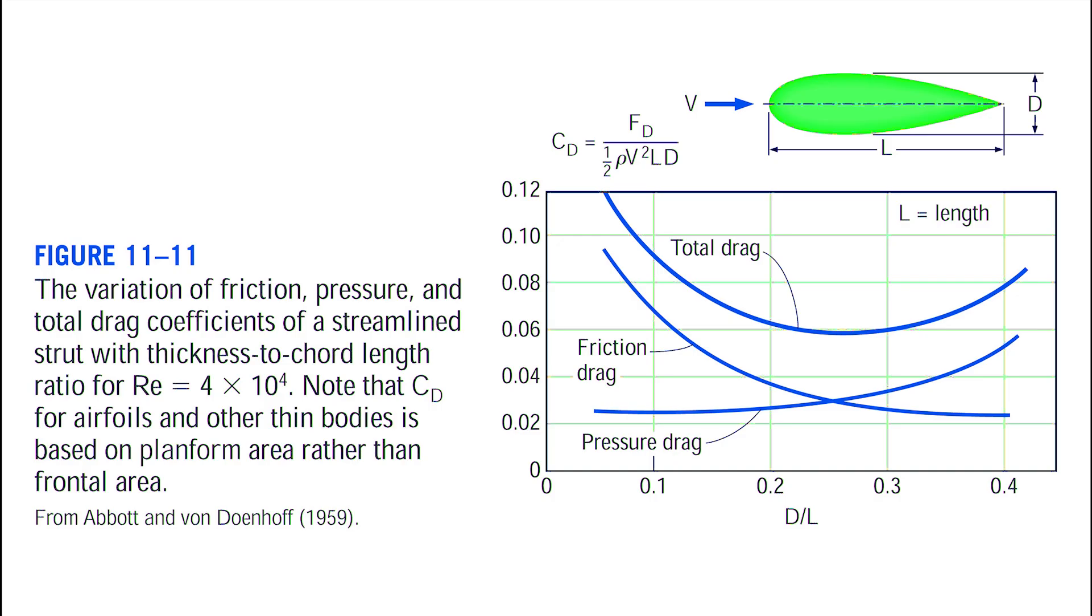Streamlining has opposite effects on pressure and friction drag. It decreases pressure drag by delaying boundary layer separation and decreasing the pressure difference between the front and back of the body.